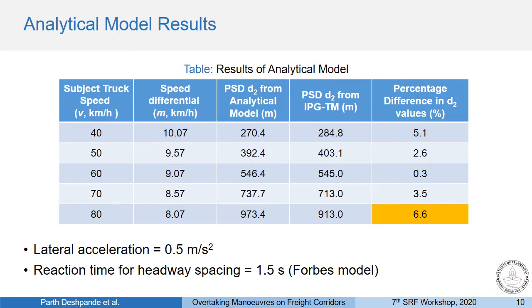Looking at results from this analytical model, the difference in D2 values is very low — the highest is around 6.6% — which is very close to Truckmaker values. This was done with a lateral acceleration of 0.5 m/s² and a reaction time of 1.5 seconds.